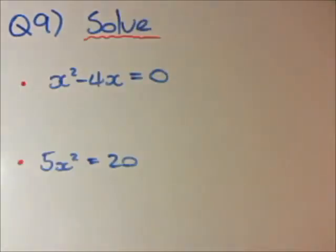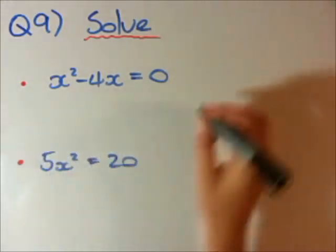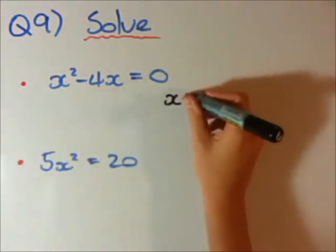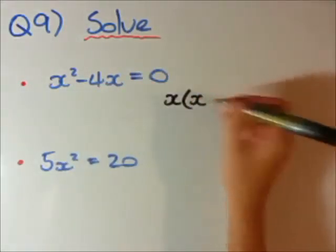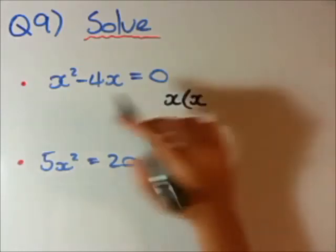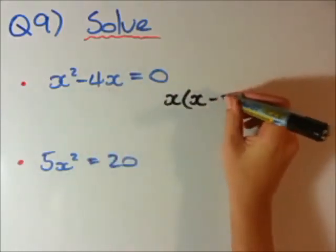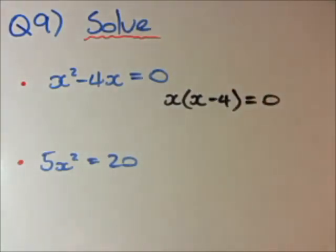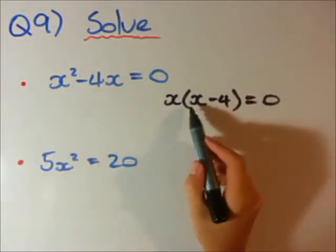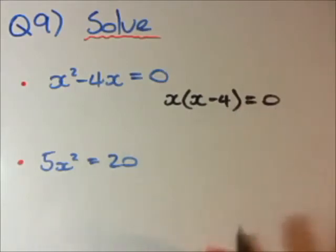Question 9. Now, we're going to use our factorizing techniques to solve for x now. So, what is common in both of these terms here? Well, x is common. So, I'm going to put it out here. Let's go x bracket. Now, x times what will give us x squared? It will give us x. And, x times what will give us minus 4x? Well, just minus 4. Pretty self-explanatory. So, we have x bracket, x minus 4 bracket equals 0.